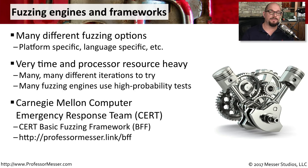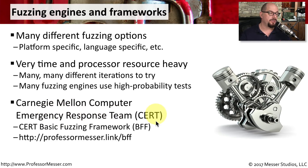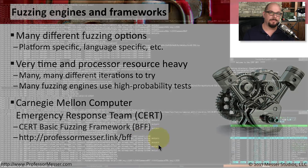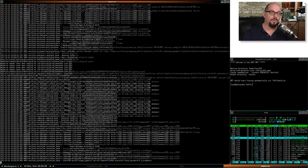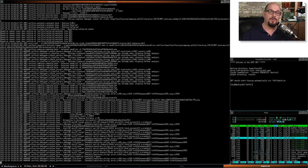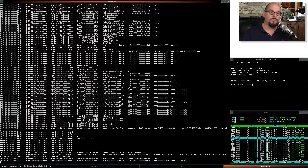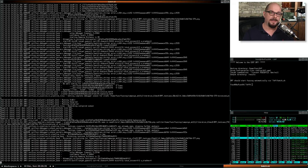If you'd like to run some fuzzing tests yourself, you can download a virtual machine from Carnegie Mellon. Their Computer Emergency Response Team, or CERT, has a basic fuzzing framework, or BFF. You can download this from professormesser.link/BFF. Here's the Carnegie Mellon fuzzer at work — you can see that it's putting input randomly into this application and evaluating what the results are of that fuzzing.